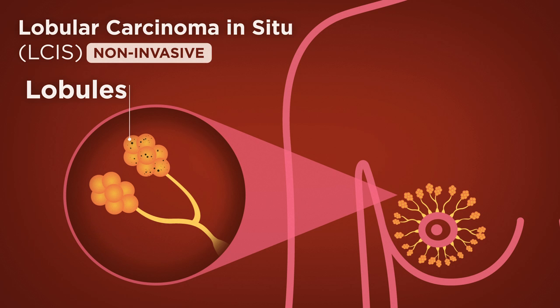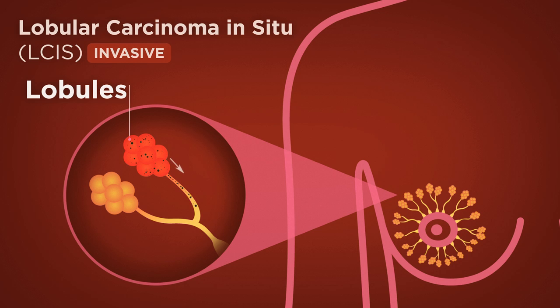Lobular carcinoma in situ, LCIS, is a precancerous condition that forms and is contained in the lobules. Invasive lobular carcinoma is a type of cancer that develops and breaks through the lobules, with the potential to spread to other areas of the body.